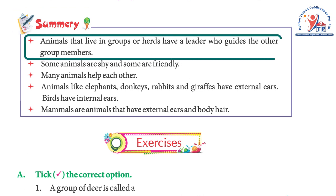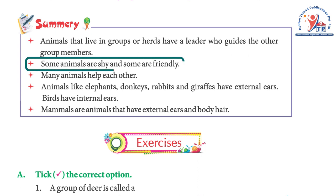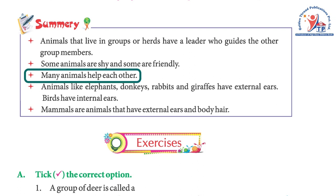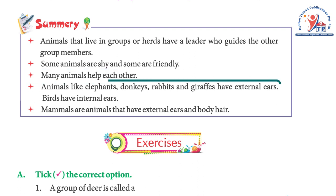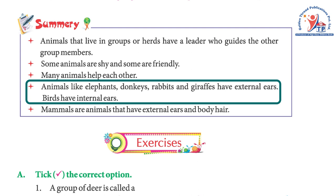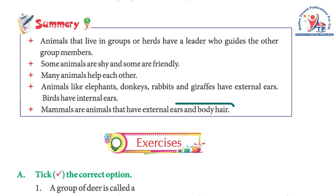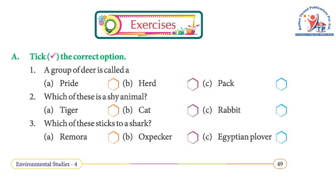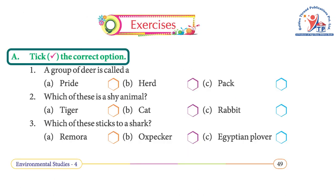Summary: Animals that live in groups or herds have a leader who guides other group members. Some animals are shy and some are friendly. Many animals help each other. Animals like elephants, donkeys, rabbits, and giraffes have external ears; birds have internal ears. Mammals are animals that have external ears and body hair.